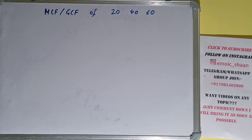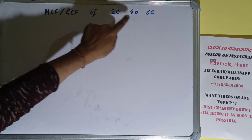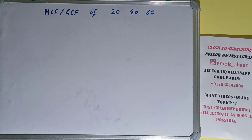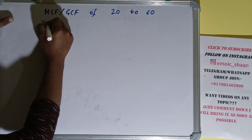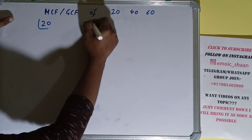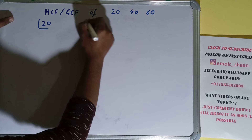Hello friends, in this video I'll be helping with the HCF or the GCF of the numbers 20, 40, and 60. To find it out, we first need to write each of the numbers separately and prime factorize each of them.